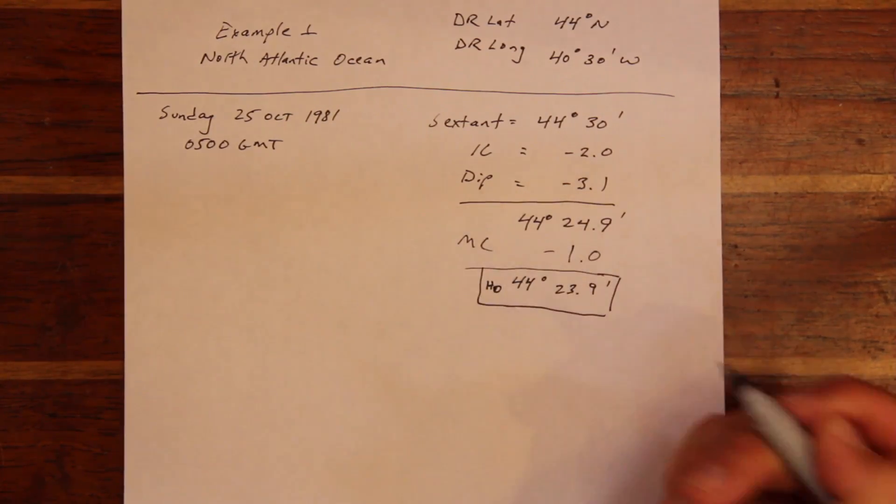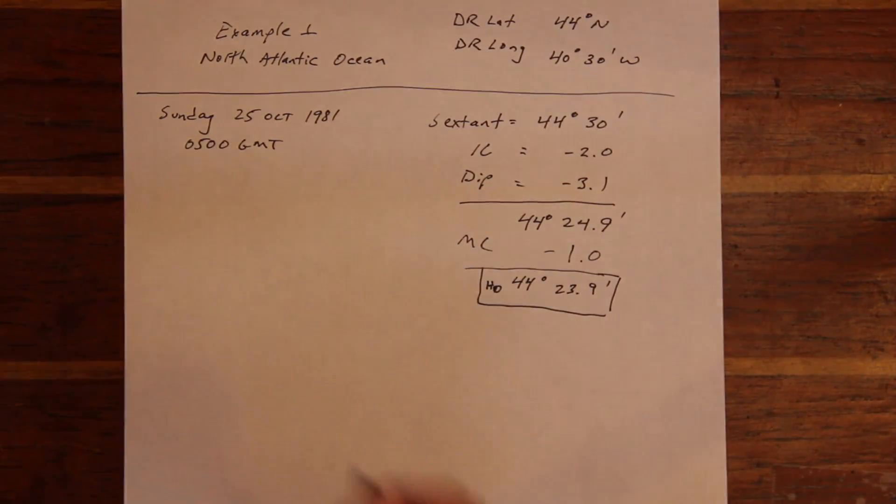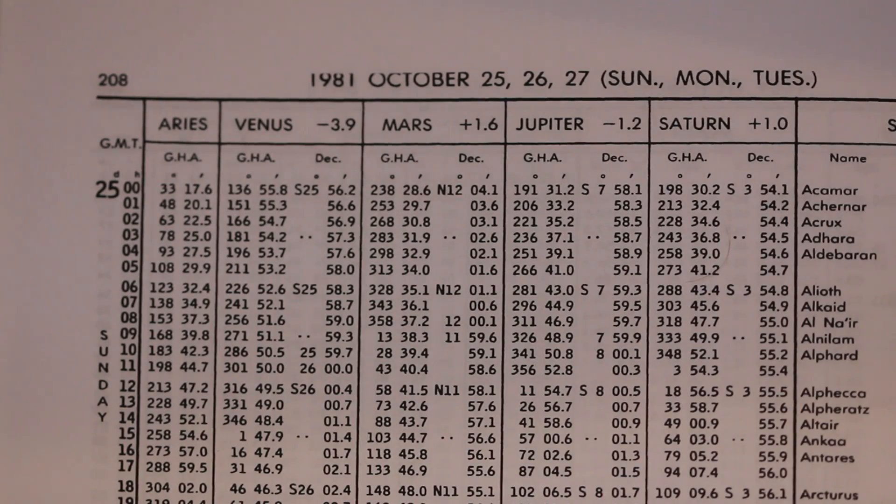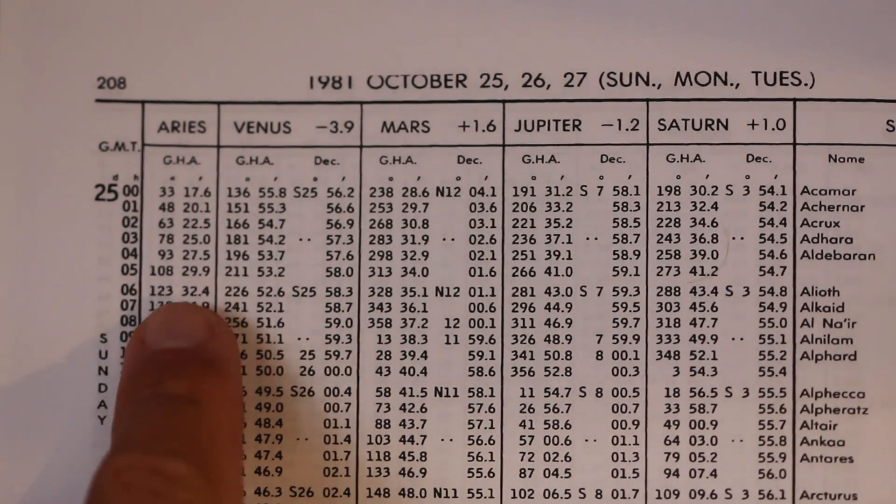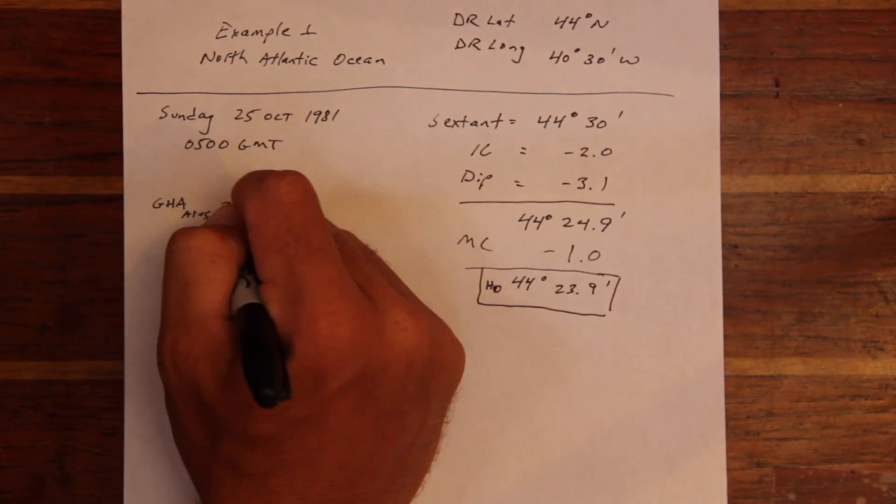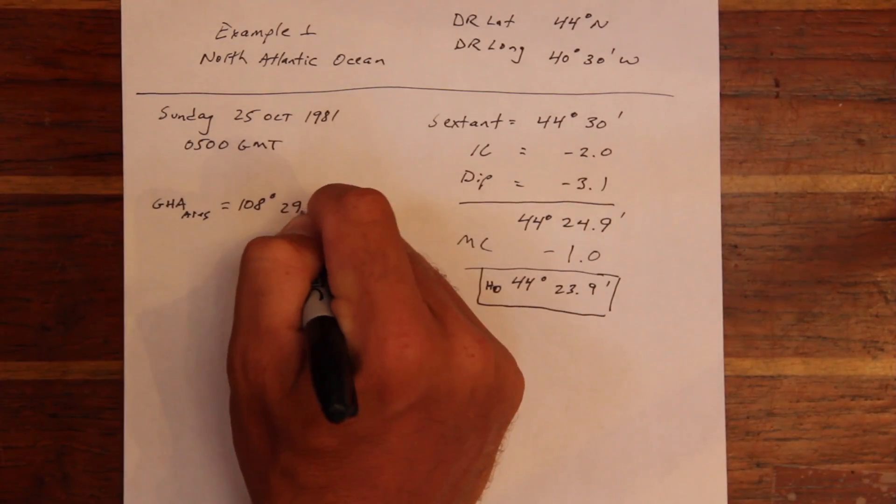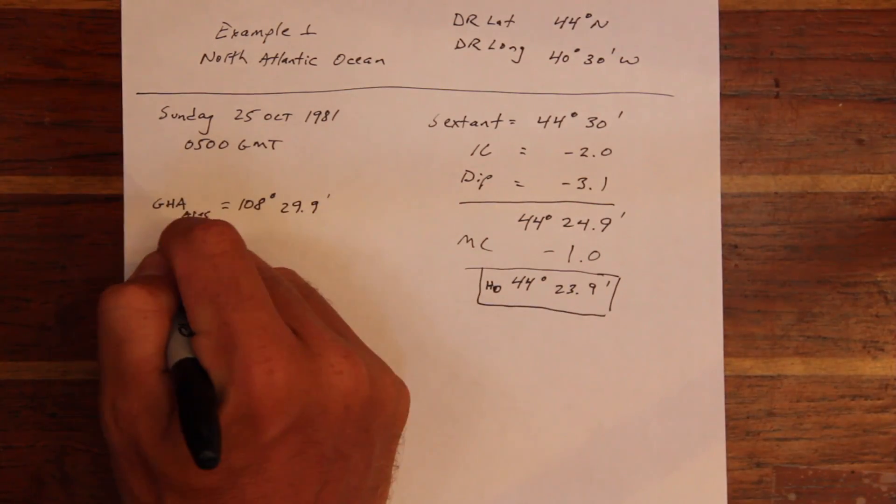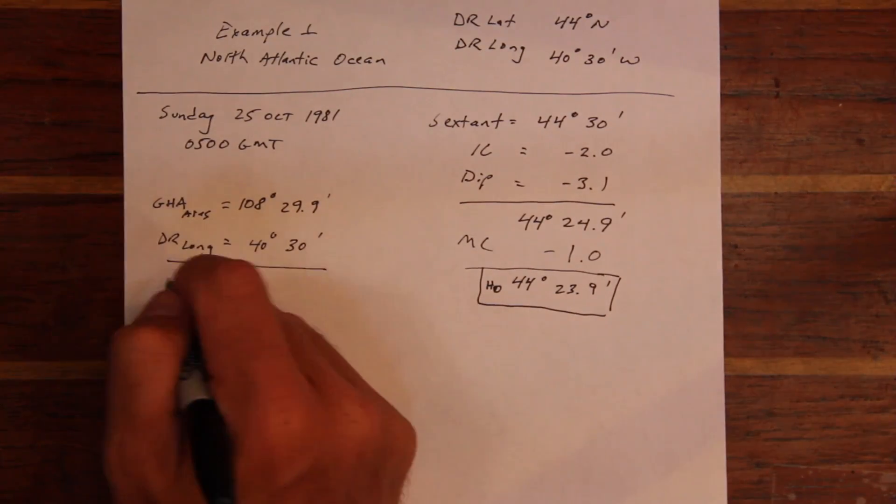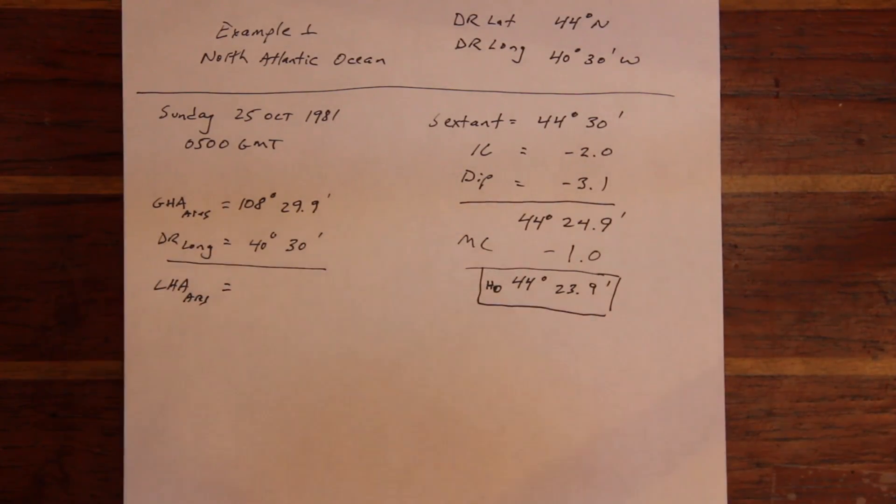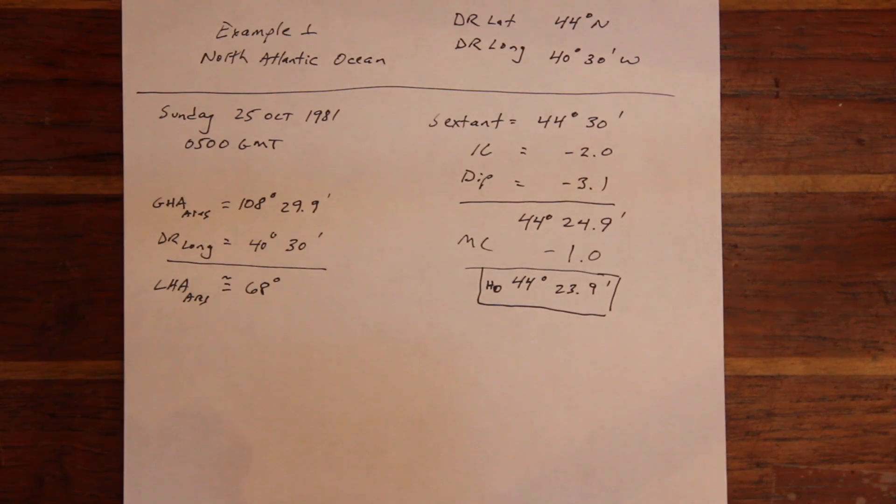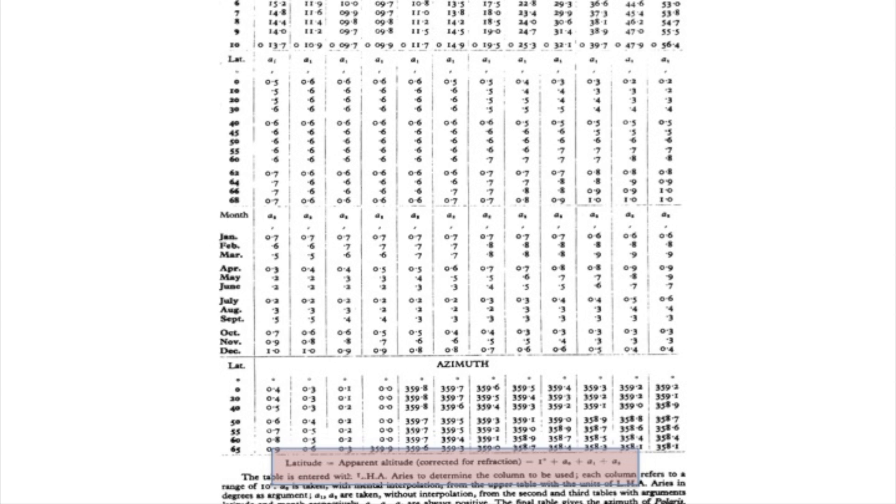Once we've determined our observed altitude, the next step is to determine the Greenwich hour angle of Aries in the nautical almanac. Since we're in the Western Hemisphere, we apply our dead reckoning longitude position to determine the local hour angle of Aries. In this example, it's sufficient to estimate the LHA of Aries.